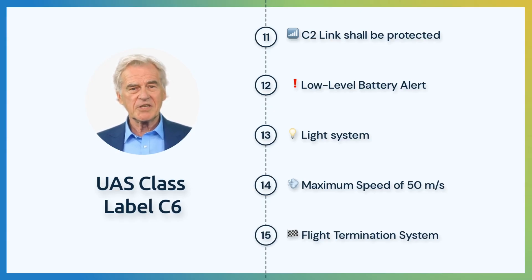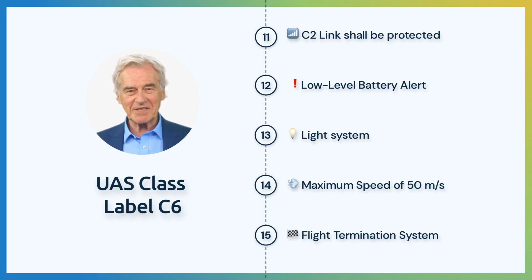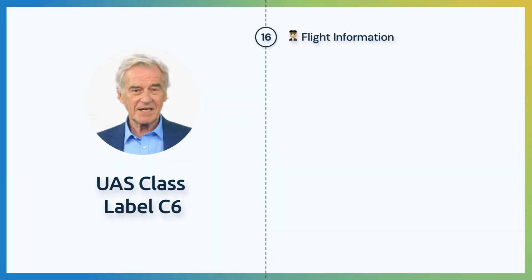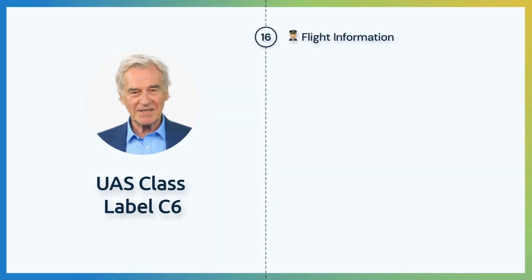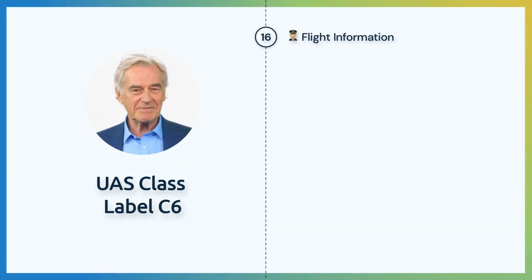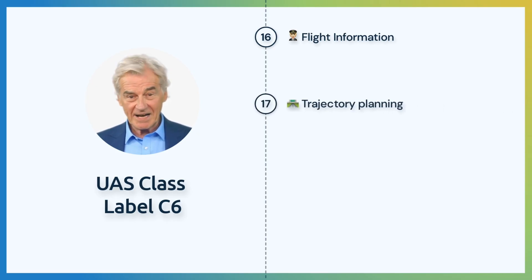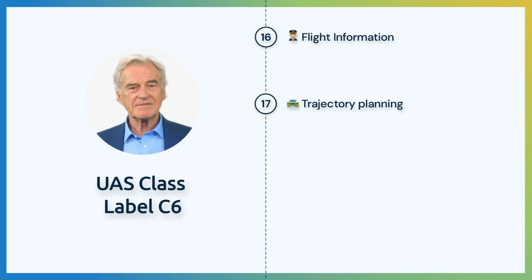Additionally, the UAS shall count with means for reducing the impact energy such as parachute systems. In-flight information must be broadcasted during the operation. It is necessary that the UAS is programmed in order to execute a predefined trajectory in an autonomous manner.